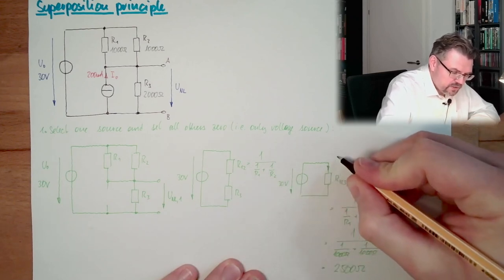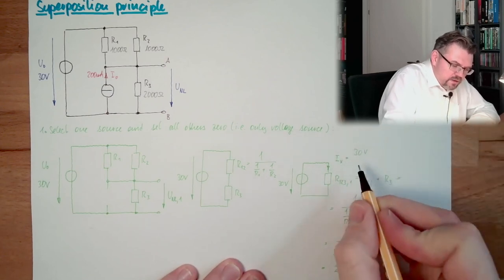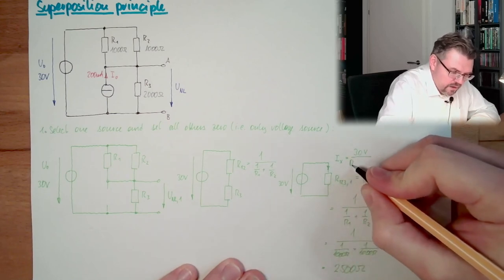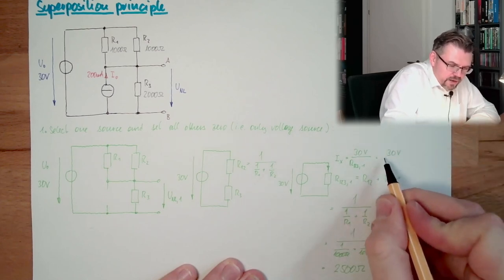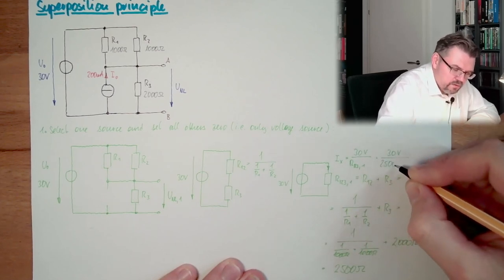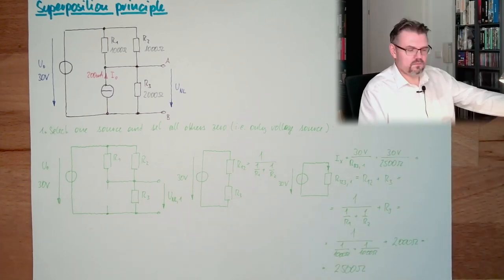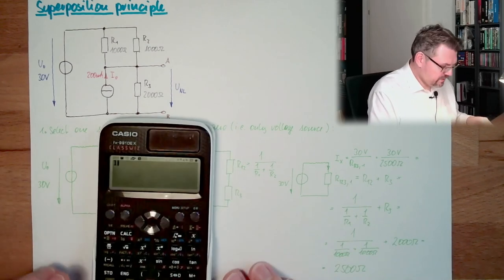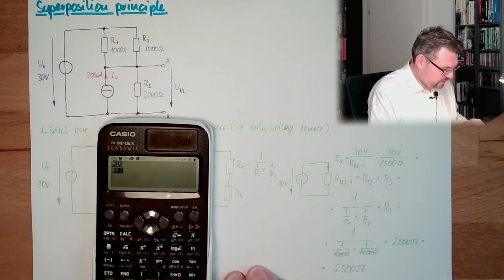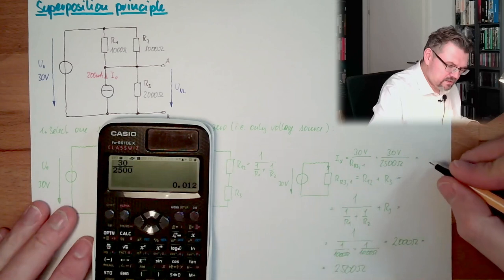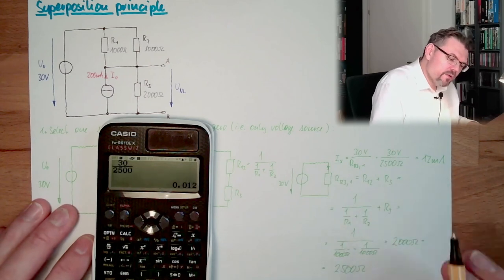So here, how much is the current? Ix. This is 30 volts divided by R1231. And this is 30 volts divided by 2,500 ohms. I grab the calculator. 30 divided by 2,500. That's 12 milliamps, 0.012 ampere.